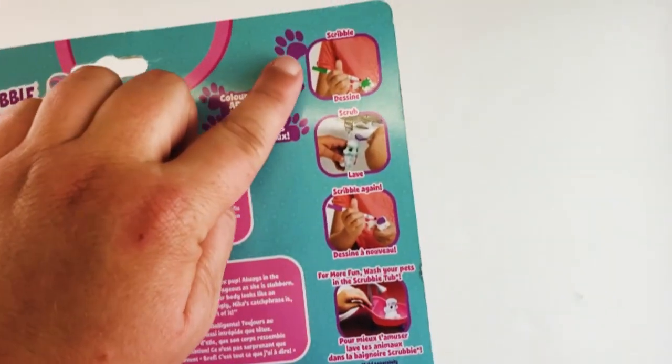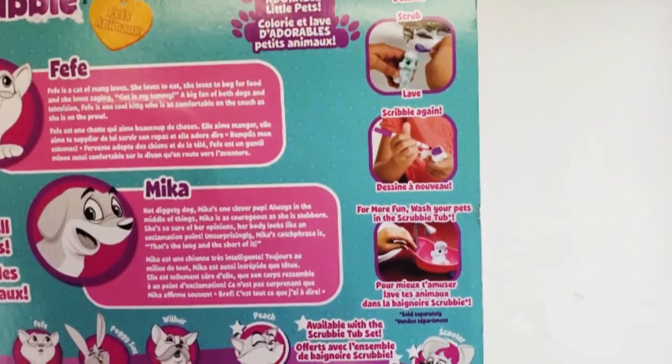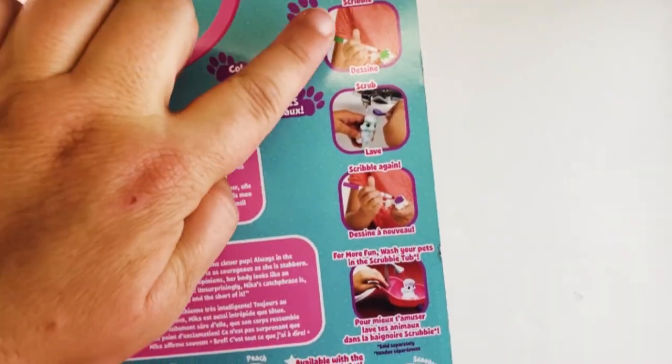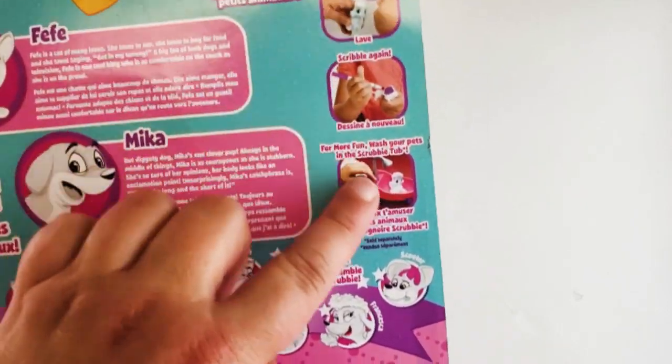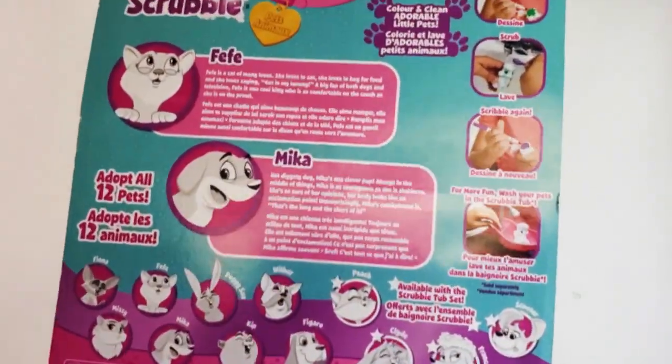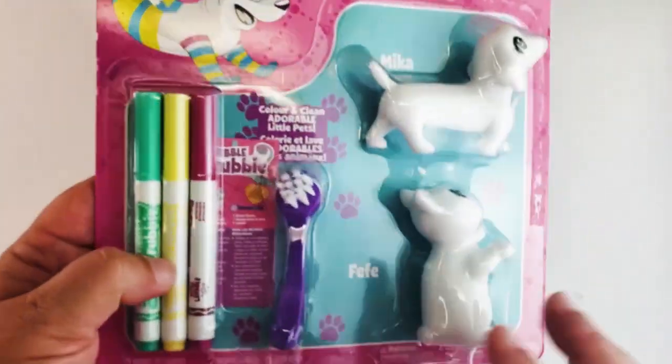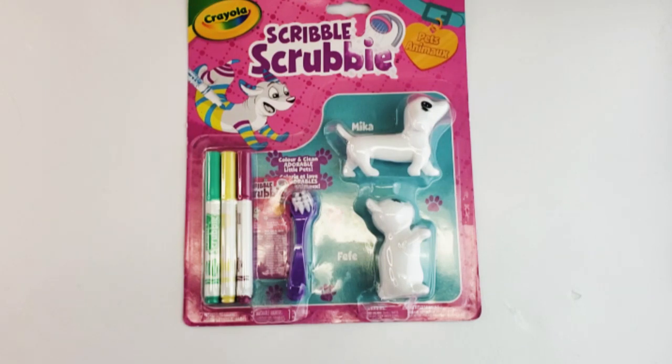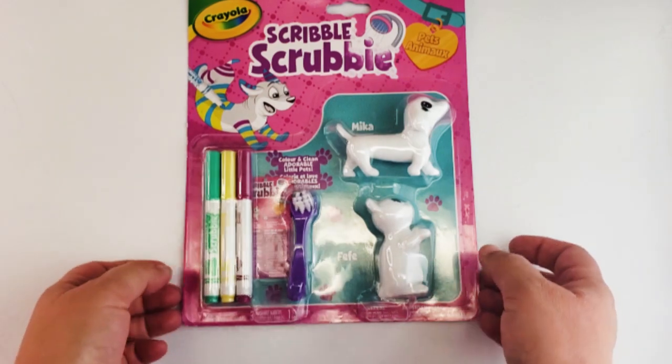On the side it actually shows you what you do - scribble, scrub, scribble again. And for even more fun you can wash them in a scrubby tub. There is a tub you can buy. If you can get the set, I'm thinking this might be a pretty cool gift because this is a little one but they have some really big ones too. So if you're looking for a birthday gift and you're on a budget, this might be it.